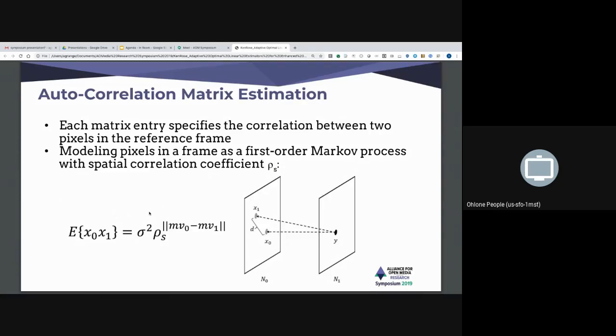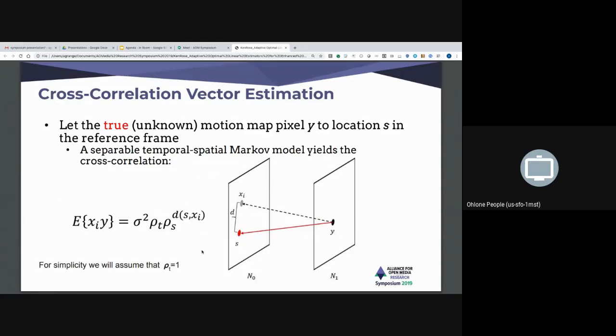So let's look at the auto-correlation matrix and how we would estimate it. Basically, each element of the matrix is the correlation between two pixels in the reference frame. And if you look at them, you'd see that they are pointing two by two motion vectors. And if we model pixels in a frame as satisfying a first-order Markov process statistics with some spatial correlation coefficient rho sub s, then the cross-correlation between any two of them would be rho to the power the distance between them, which would be basically the norm of the difference between the motion vectors. And we can estimate those rhos from just a whole bunch of statistics.